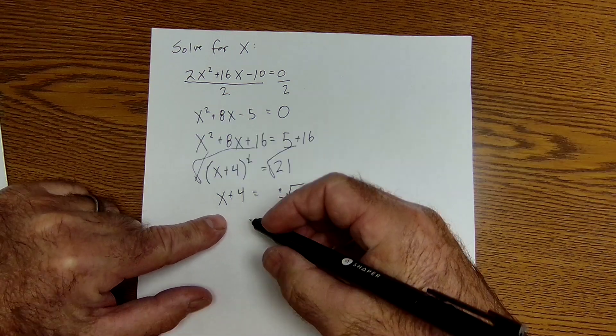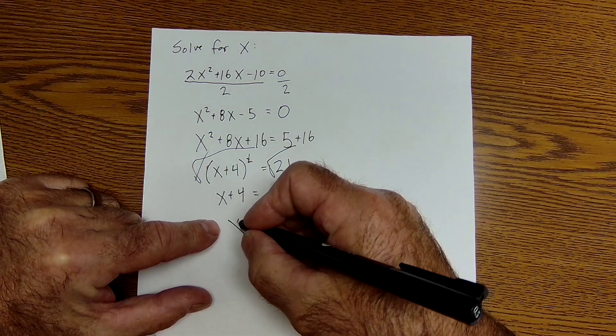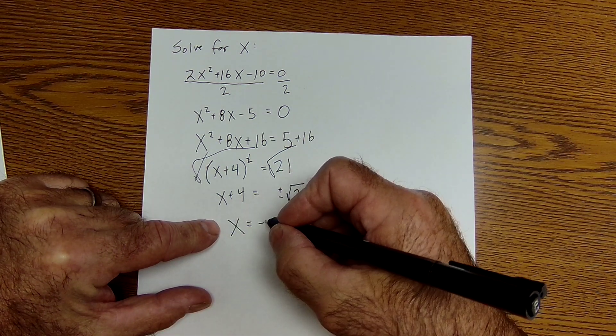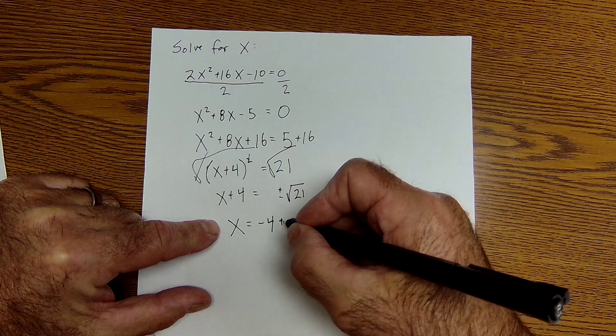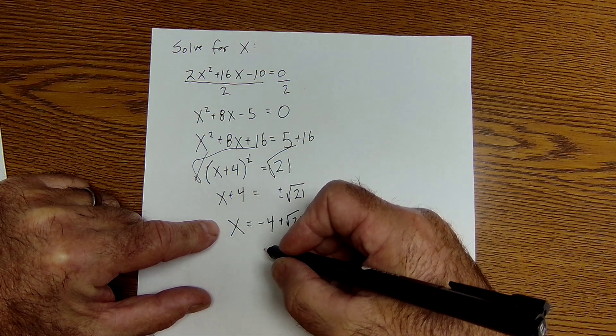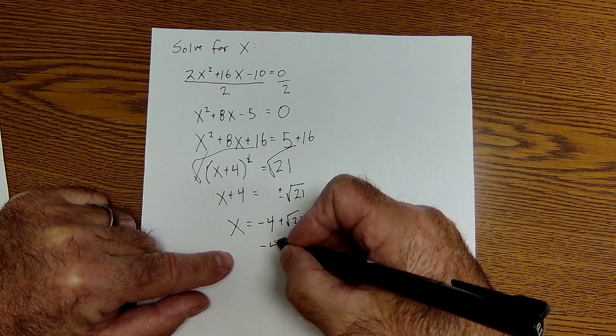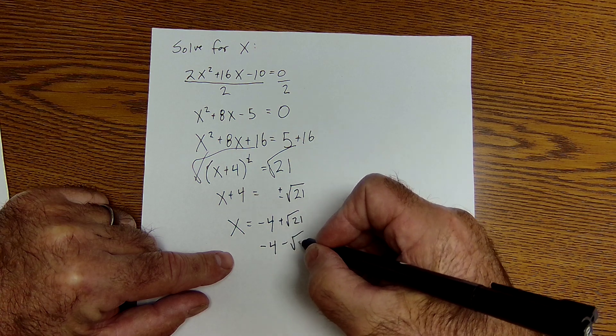So I'm going to subtract 4 from both sides. X equals negative 4 plus root 21, or X equals negative 4 minus root 21.